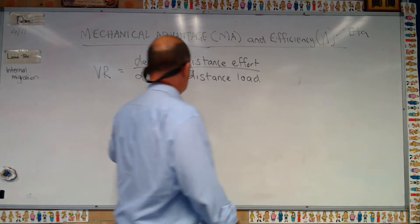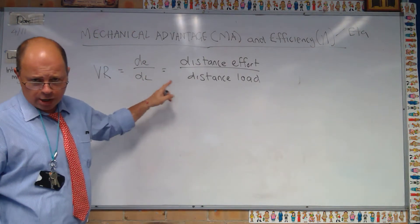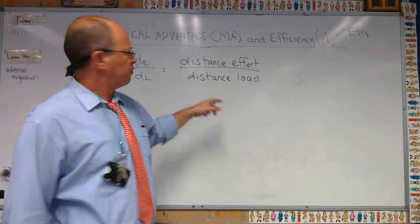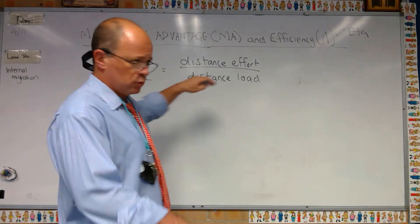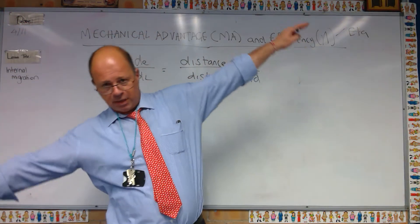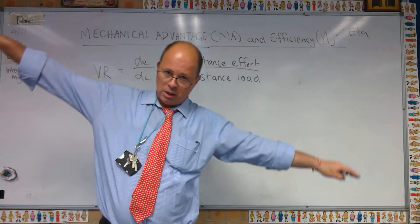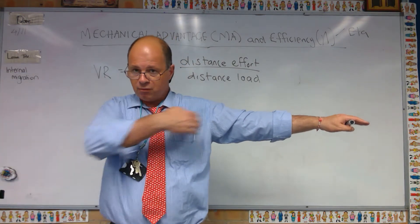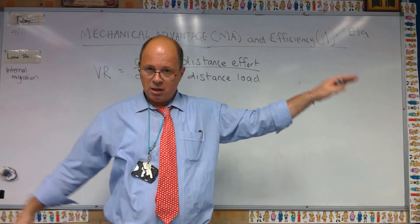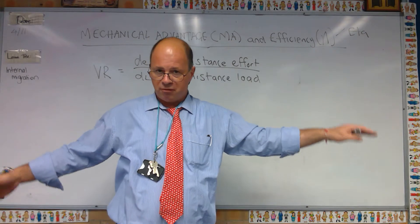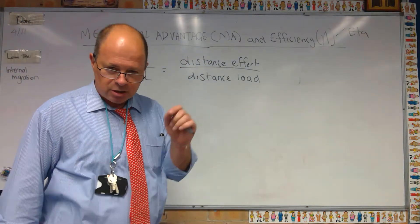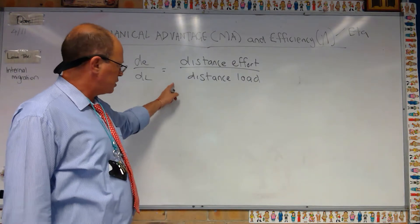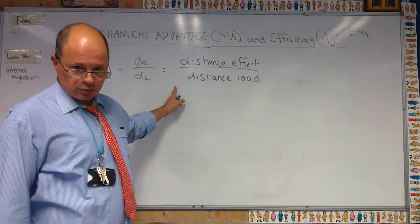You might be saying, well, if it's a velocity ratio, why are we only dealing with distance? Both arms, when they're moving as part of a seesaw, are moving over the same period of time. If the fulcrum is moved away from the centre, one will move faster or slower than the other, but the time is the same — so you can cancel the time out.